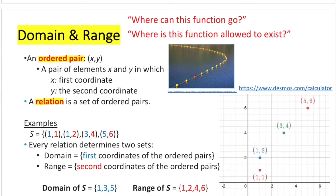In this example, S is known to be a relation because it is a set of ordered pairs. We have four ordered pairs: (1,1), (1,2), (3,4), and (5,6). So every relation determines two sets: the domain and the range.